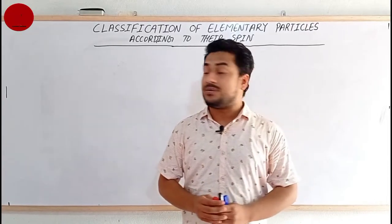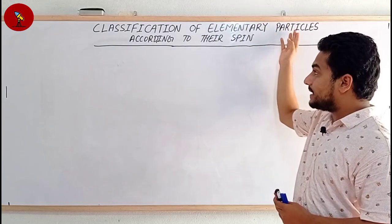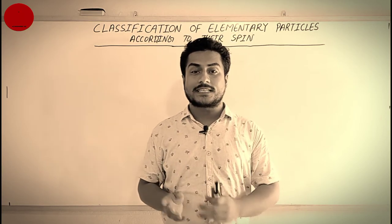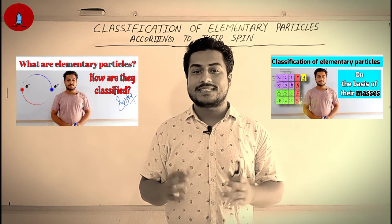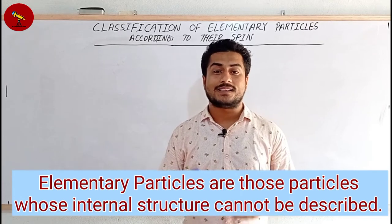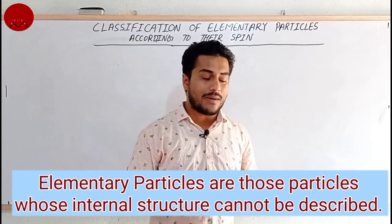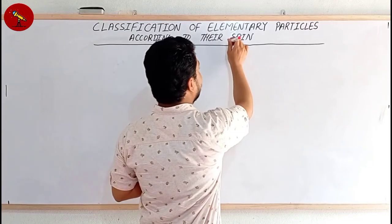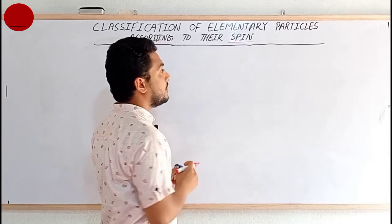Hello everybody. Today we are going to discuss about classification of elementary particles according to their spin. In my previous video, I have already explained about elementary particles and classification of elementary particles according to their mass. Elementary particles are subatomic particles which do not have internal structure, and today we are going to study about spin and classification of elementary particles according to their spin.